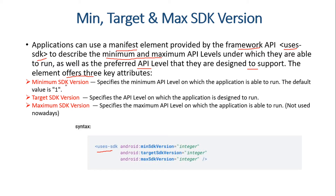The first attribute is minimum SDK version, which specifies the minimum API level on which the application is able to run — the default value is 1. The second is target SDK version, which specifies the API level on which the application is designed to run. The third is maximum SDK version, which specifies the maximum API level on which the application can run, though this attribute is not declared nowadays — we will see why.